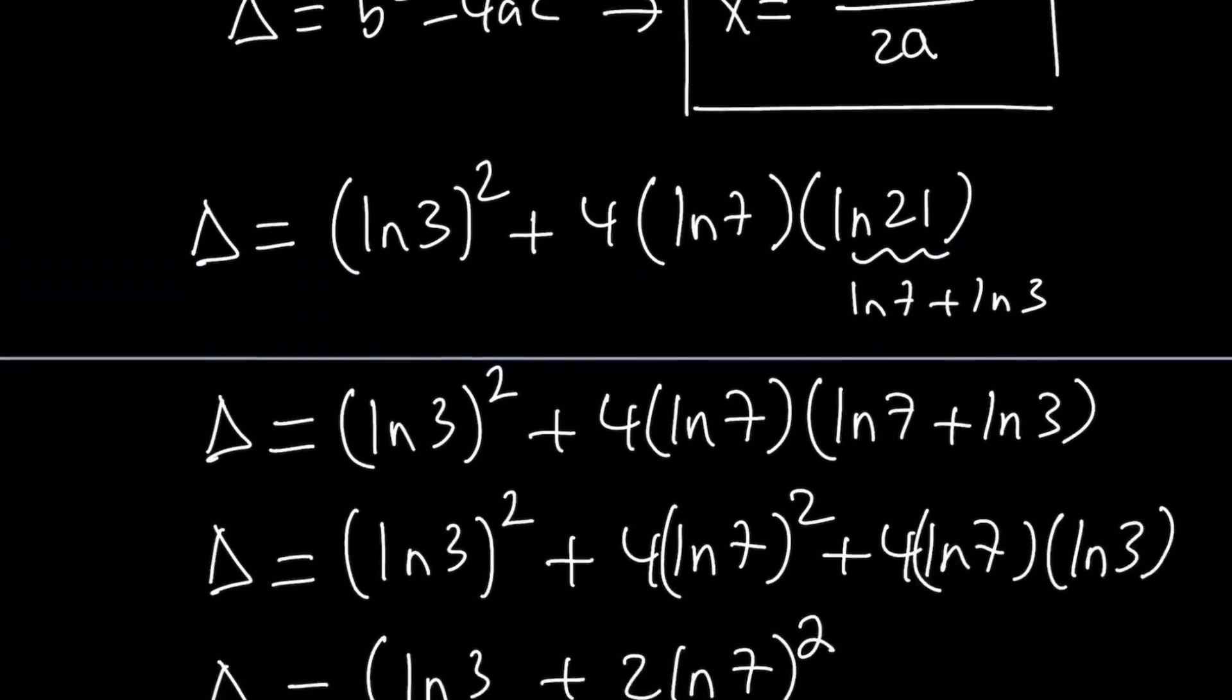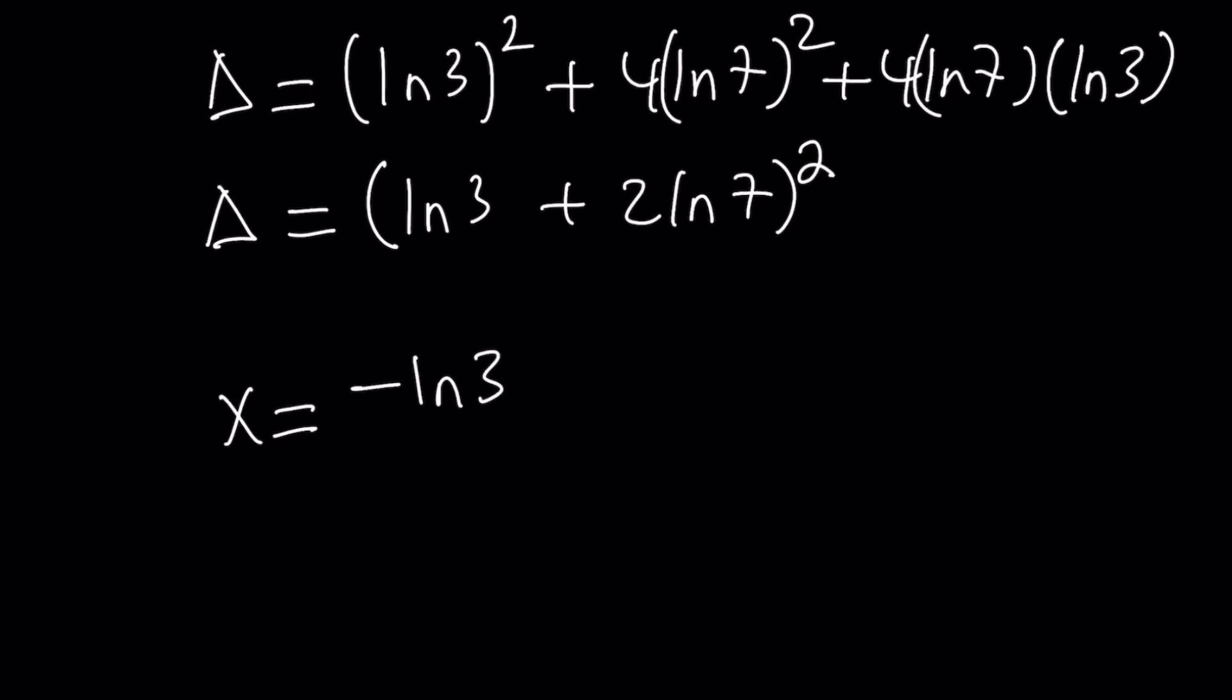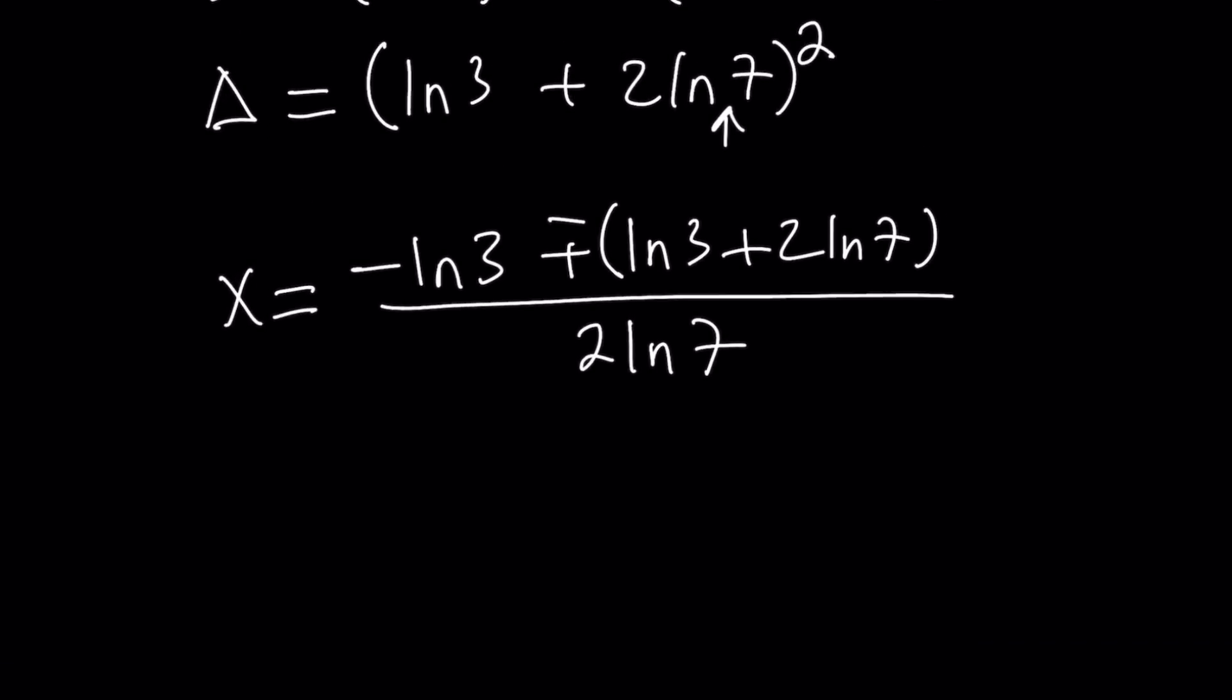So let's go ahead and write the solutions based on this, negative b. And remember, b was ln 3. So that's going to be negative ln 3 plus minus the square root of this, which is actually going to be the same thing without the square. So it's going to be ln 3 plus 2 ln 7. But don't worry, I'm going to use parentheses so they don't mix. We don't lose any roots. And that's going to be divided by 2a, which is going to be 2 ln 7. Now let's go ahead and separate this into two cases, right? With the plus sign first, negative ln 3 plus ln 3 plus 2 ln 7. You get the idea. Something is going to cancel out.